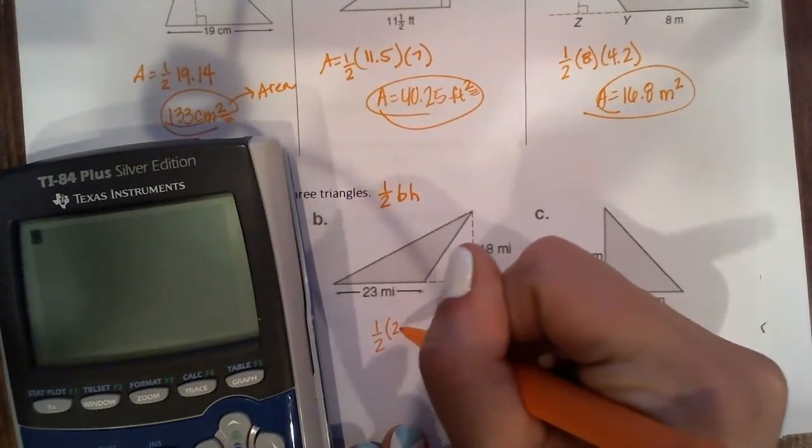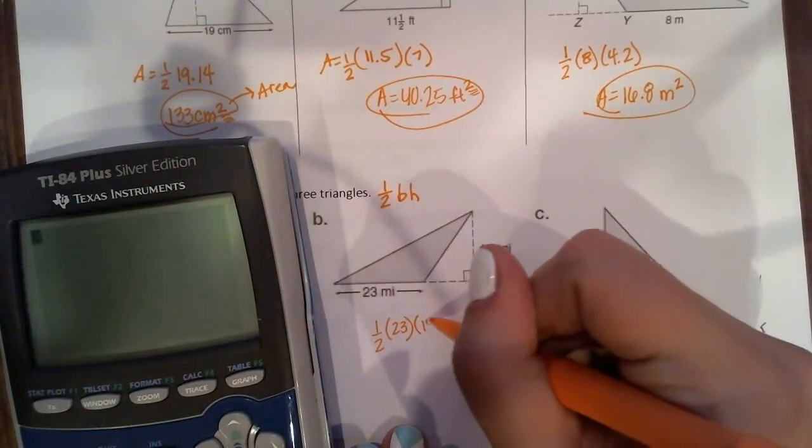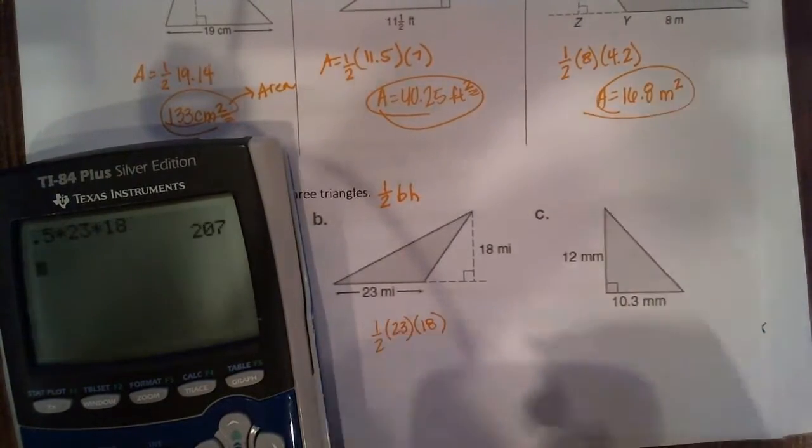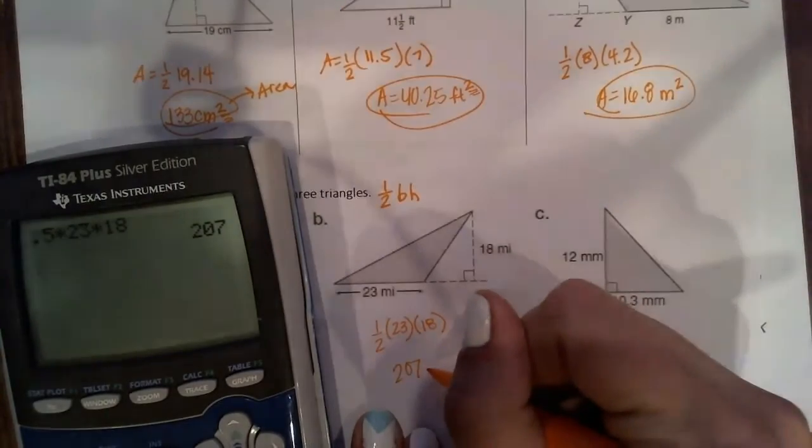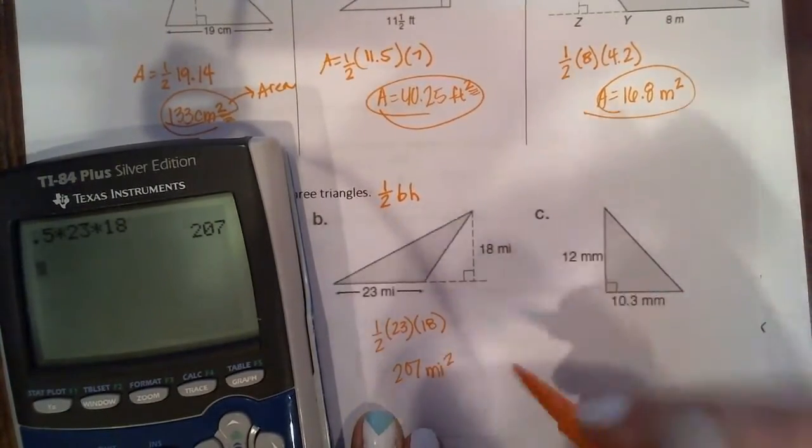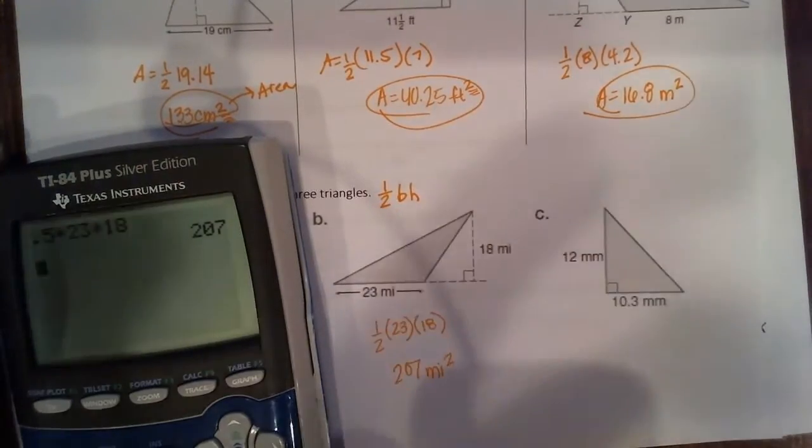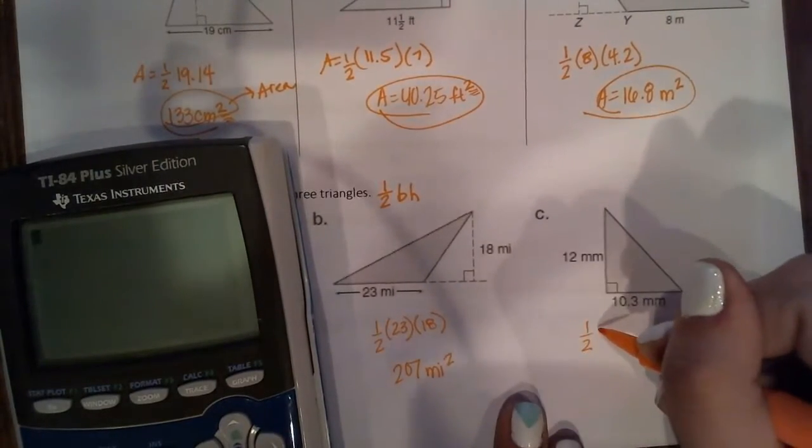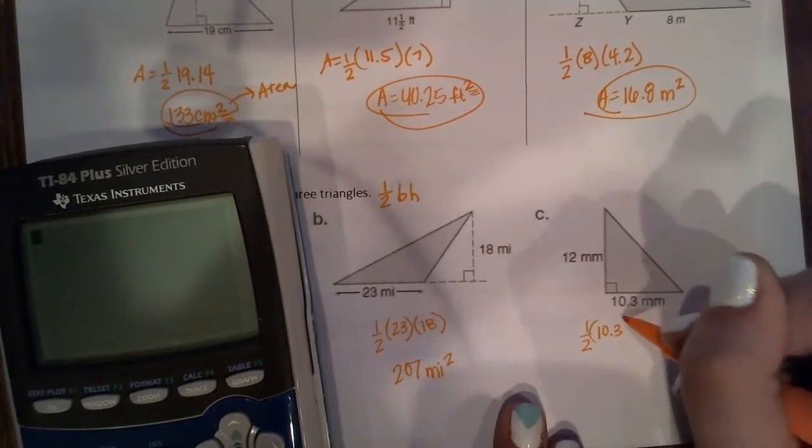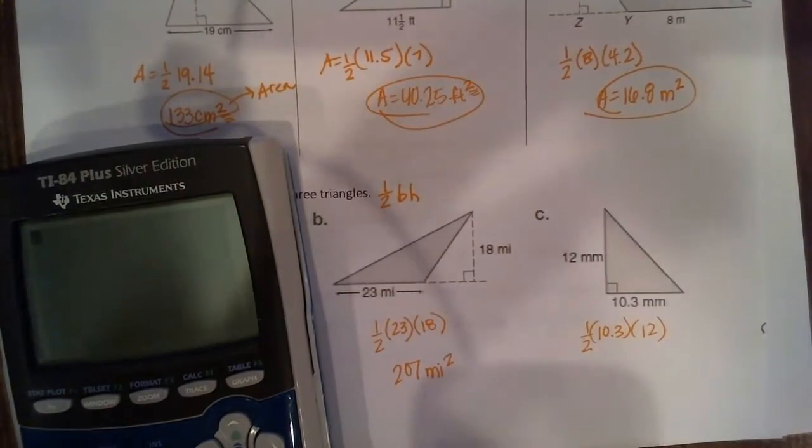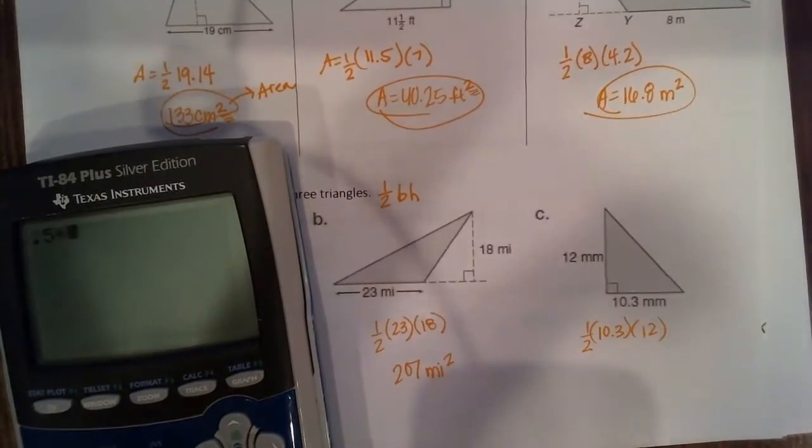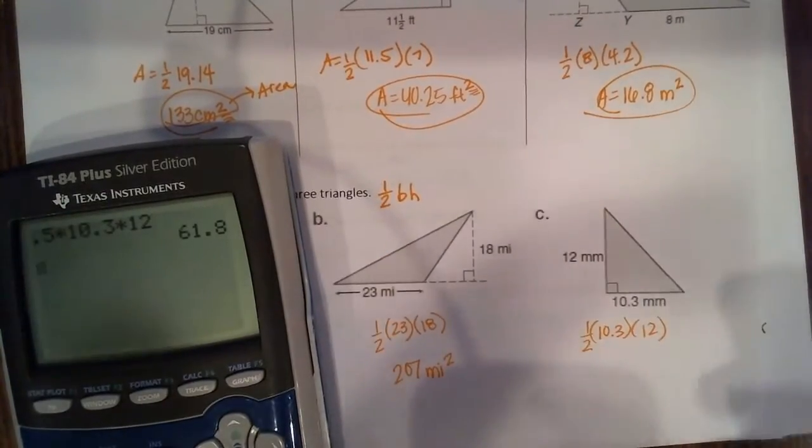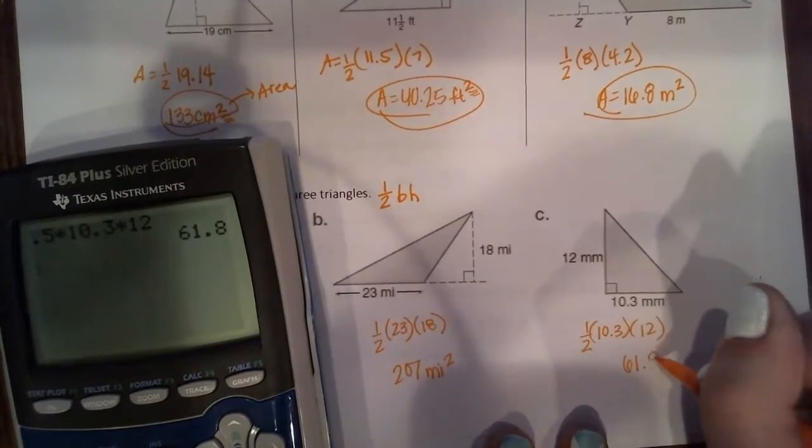Now I can do one-half base 23, height 18. 207 miles squared. Whatever this is, is huge, so hopefully it's not anything around here. And lastly, one-half base is 10.3 minus 12. 61.8 millimeters squared. That's our answer.